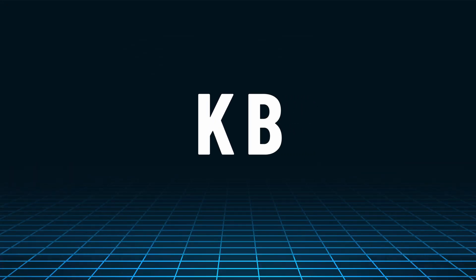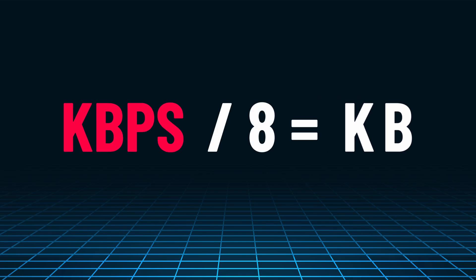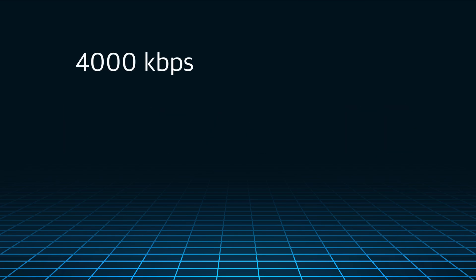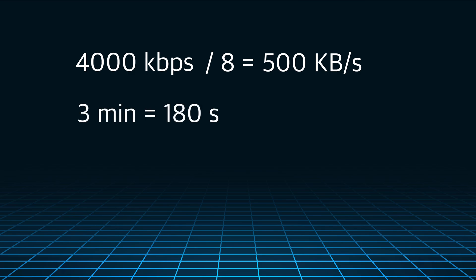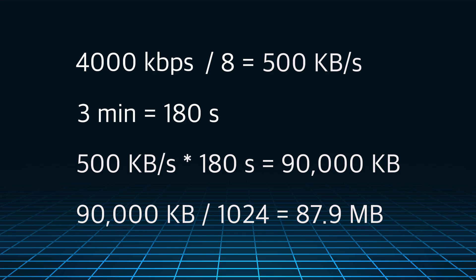With CBR, this is not a concern because the bitrate remains constant, ensuring a consistent and calculable file size. It's important to note that KB is a common unit for measuring file size, and KB values differ from bitrate values — the calculation of KB values is obtained by dividing the bitrate value by 8. For example, a video with a bitrate of 4,000 kbps translates to approximately 500 KBps per second. So if this 4,000 kbps video is three minutes long, multiplying 500 KBps by 180 seconds gives a video size of 90,000 KB, which is approximately 87.9 MB.